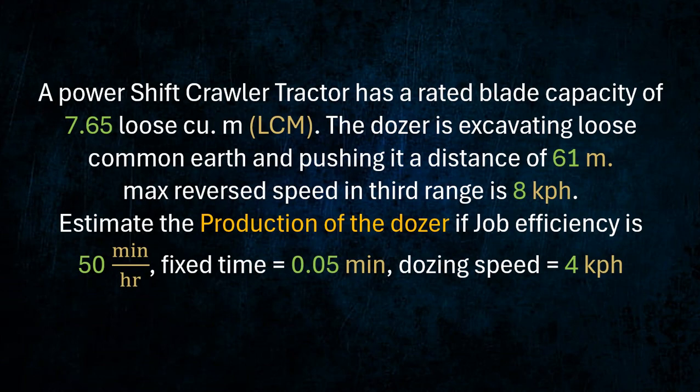A power shift crawler tractor has a rated blade capacity of 7.65 loose cubic meters. The dozer is excavating loose common earth and pushing it a distance of 61 meters. Max reversed speed in third range is 8 kilometers per hour.